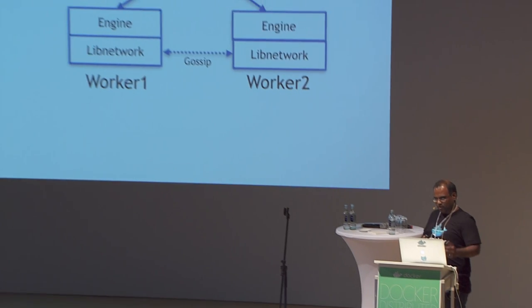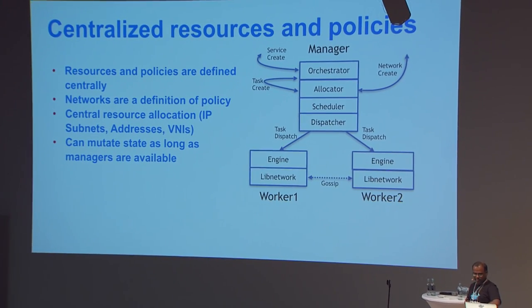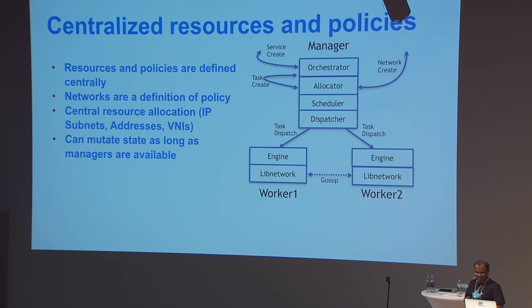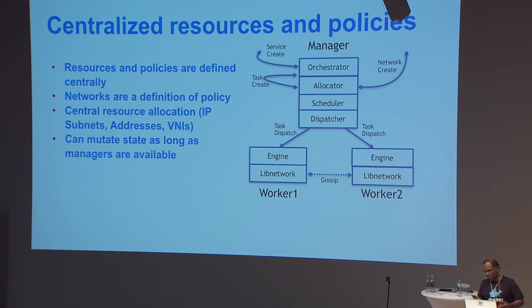To do those centralized allocations, we do them in the allocator in the manager. We can mutate state in the manager only if managers are available — so these being centralized by nature, you need manager availability to do those things. Once those allocations have happened, the resources and information are downloaded into the workers whenever a particular task is allocated or assigned. In the future, we can define new policies beyond just networks — maybe more fine-grained policies — and there's an avenue for opening up that API for plugin management.